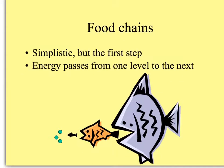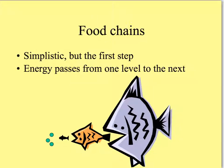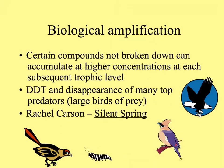Tiny phytoplankton and algae are eaten by smaller herbivorous fish, sometimes eaten by bigger fish as well. Those are eaten by the next size up, the first level carnivores, and then the second level carnivores. Not only energy moves up food chains, but certain compounds that aren't broken down can accumulate at higher concentrations at each subsequent trophic level, like toxins and poisons.